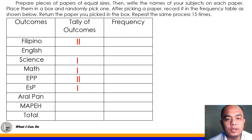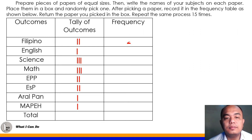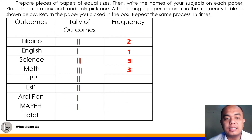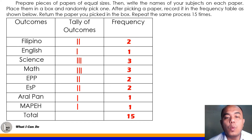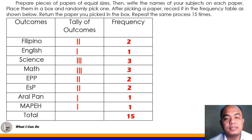Just observe how we tally the result. We are picking a paper wherein each paper has a subject. For Filipino, we have two times — dalawang beses siya na bunot. Yung English, one time lang. Yung Science, three times. Yung Math is three times. EPP, two times. ESP, two times. Araling Panlipunan, one time. And MAPE, one time. All in all, we have 15 times na ginawa yung activity. This is a sample result for this activity.